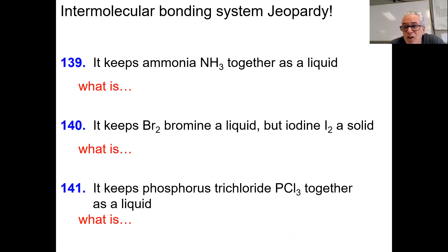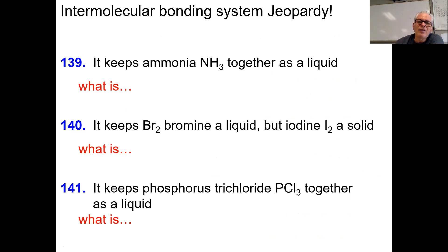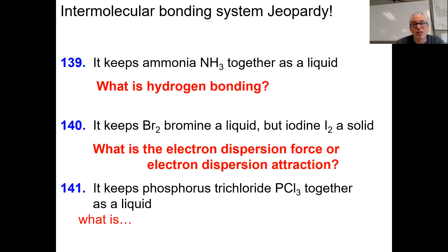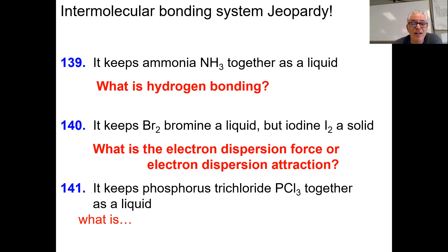This is called intermolecular bonding jeopardy — I give you the answer and you give me the question. It keeps ammonia NH3 together as a liquid — what is hydrogen bonding? That's fancy dipole, super dipole. NH3 has hydrogen bonding — polar bonds and polar molecules containing hydrogen. Bromine is a liquid but it keeps iodine as a solid — what is electron dispersion? PCl3 is polar bonding but has no hydrogen, so what keeps it together as a liquid is dipole attraction.